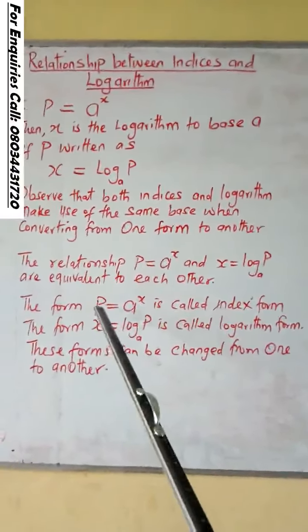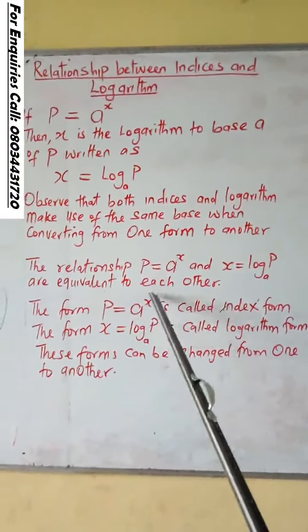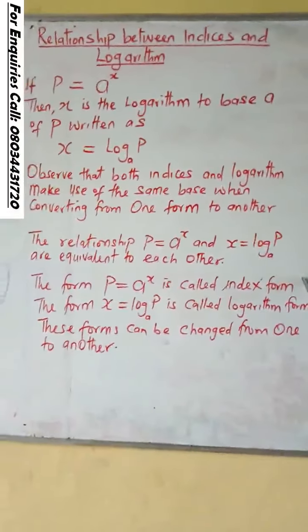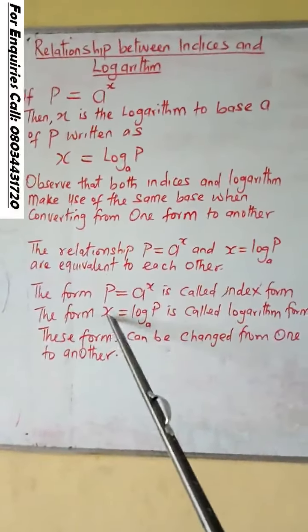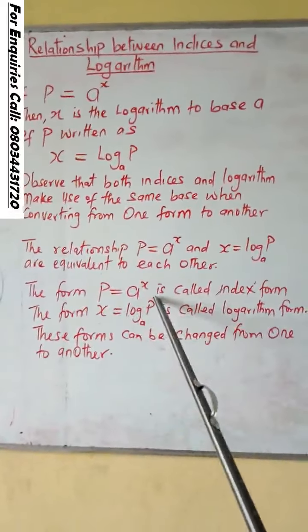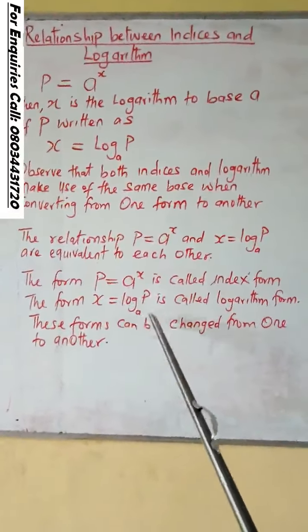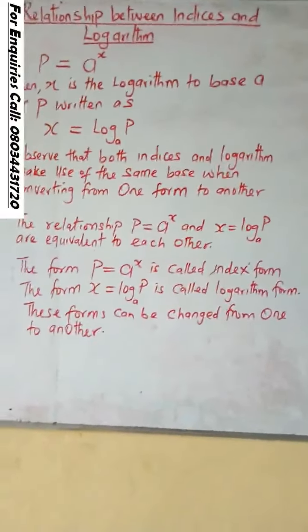The form P equals A to the power of X is called the index form. And the form X equals log P base A is called the logarithm form.